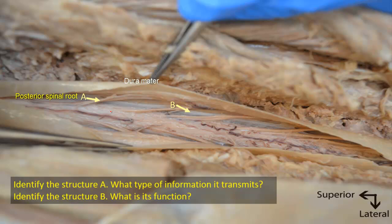It transmits sensory information, both somatic and visceral. The anterior root transmits motor information, and the spinal nerve, which is formed by the union of the posterior and anterior roots, is thus mixed sensory and motor. But structure A, the posterior root, is sensory.